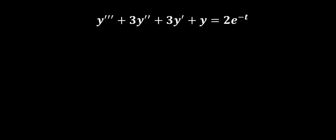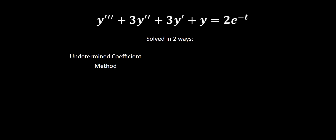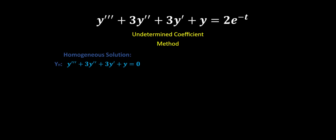Let's solve this differential equation. We have y triple prime plus 3y double prime plus 3y prime plus y equals 2e to the negative t. This is a non-homogeneous equation — we have this 2e to the negative t on the right-hand side. In this video, I'm going to solve it in two different ways: with the undetermined coefficient method, and then with the variation of parameters method. First up, the undetermined coefficient method.